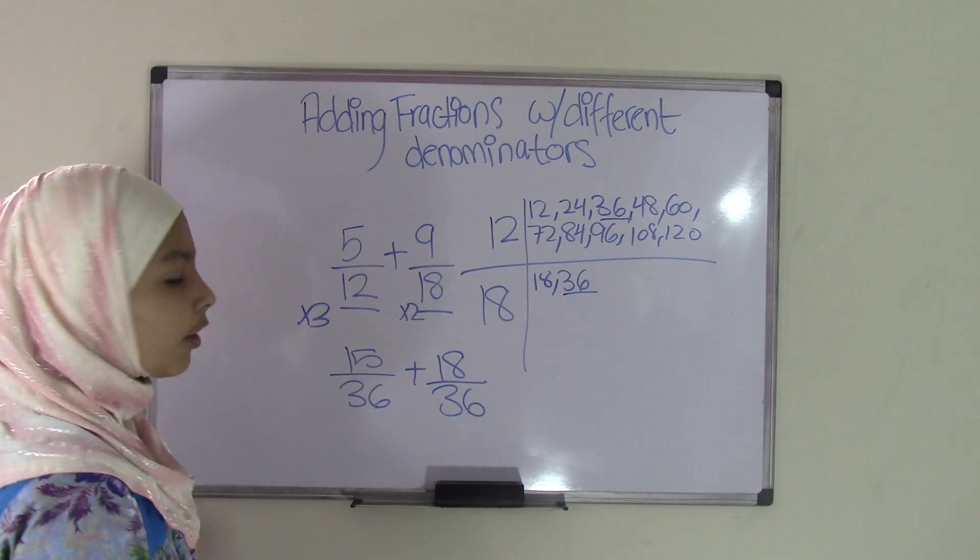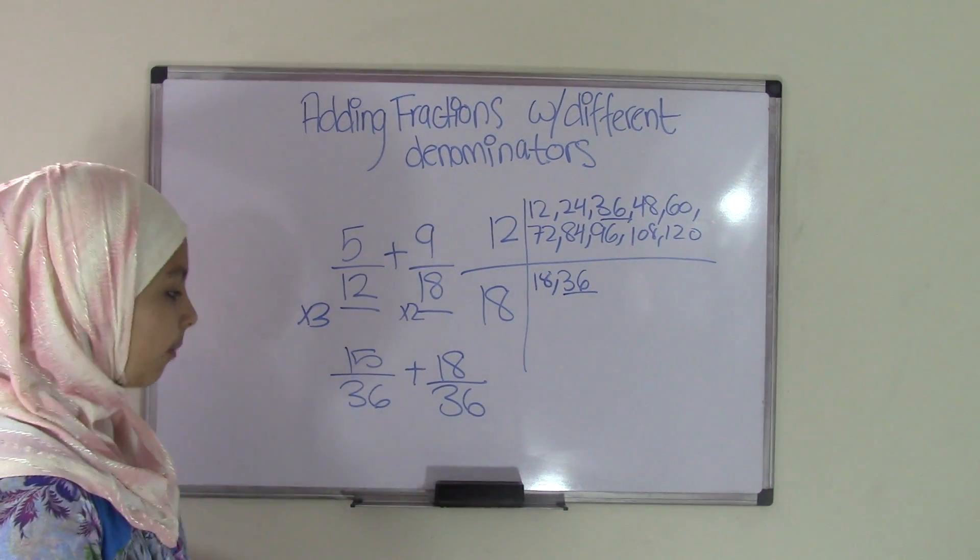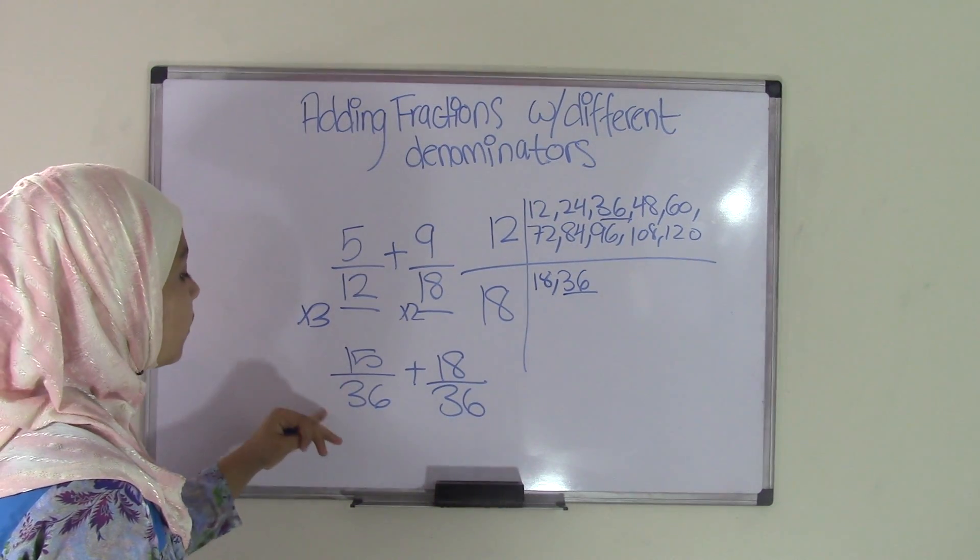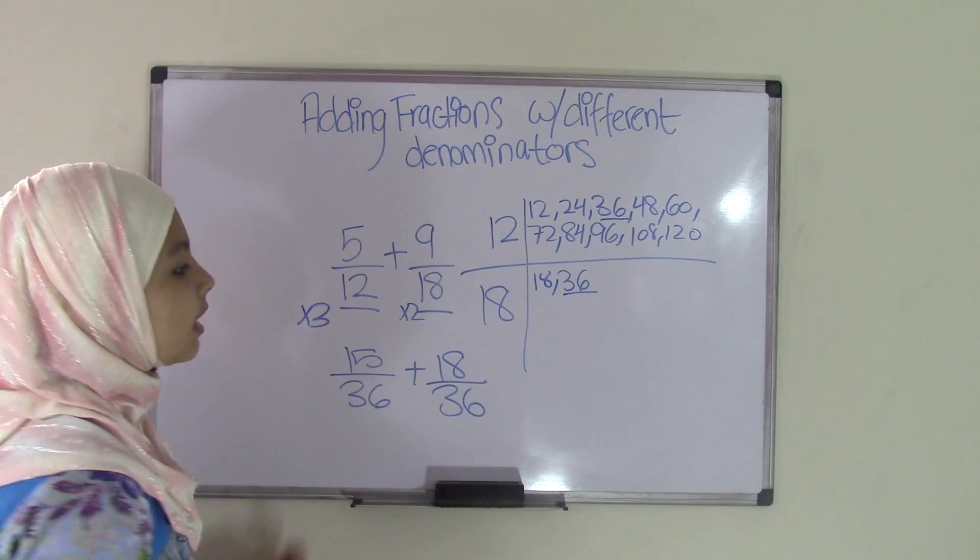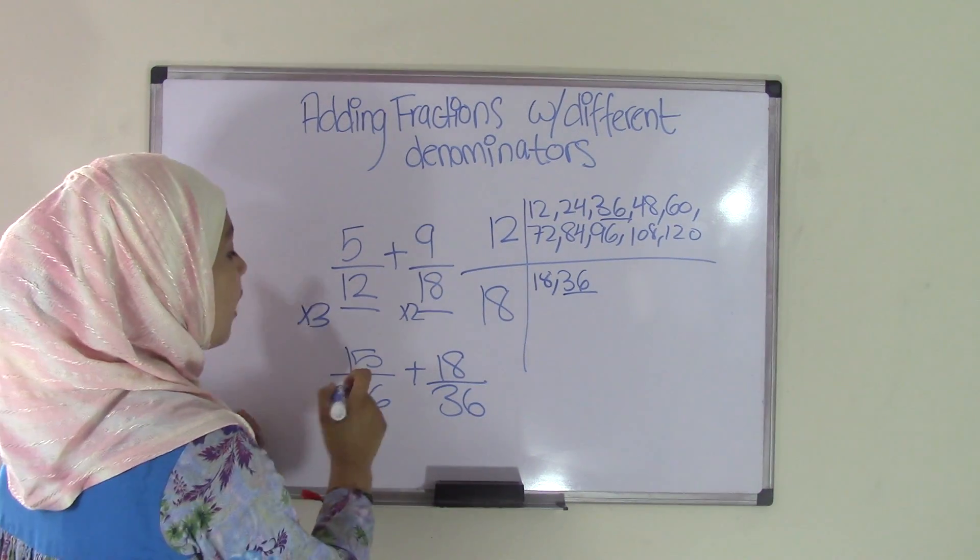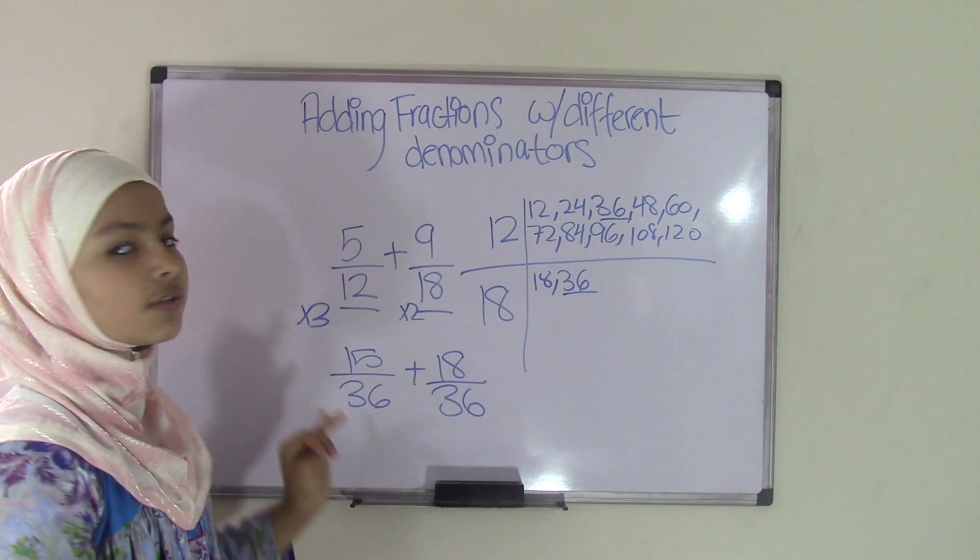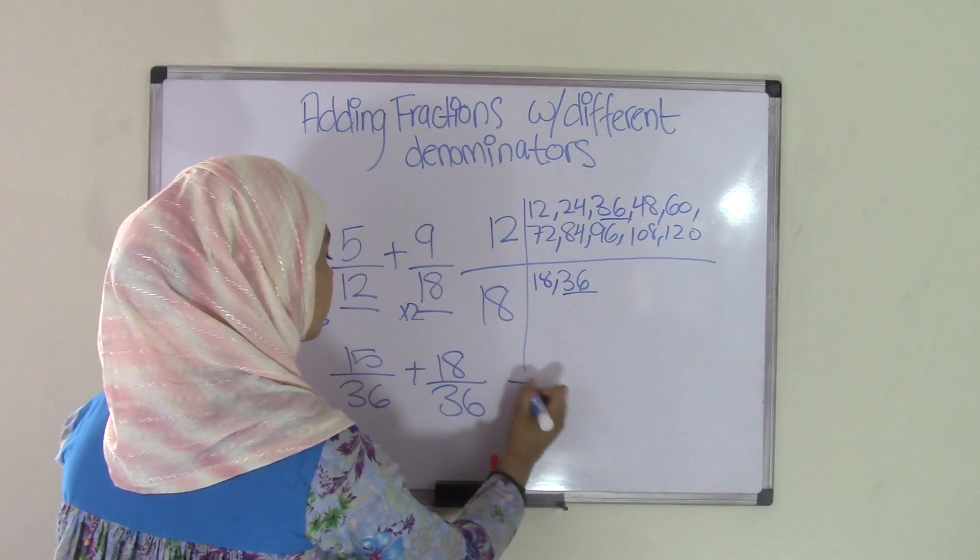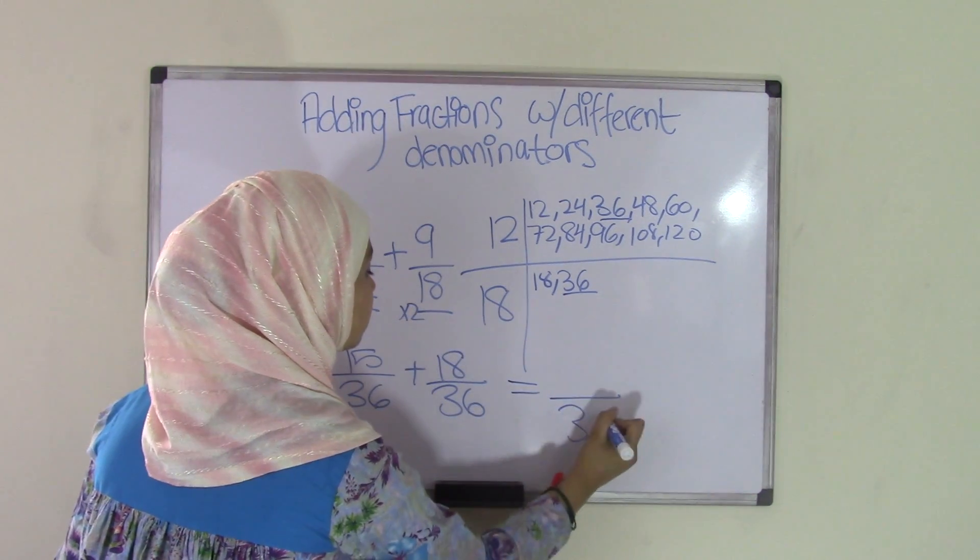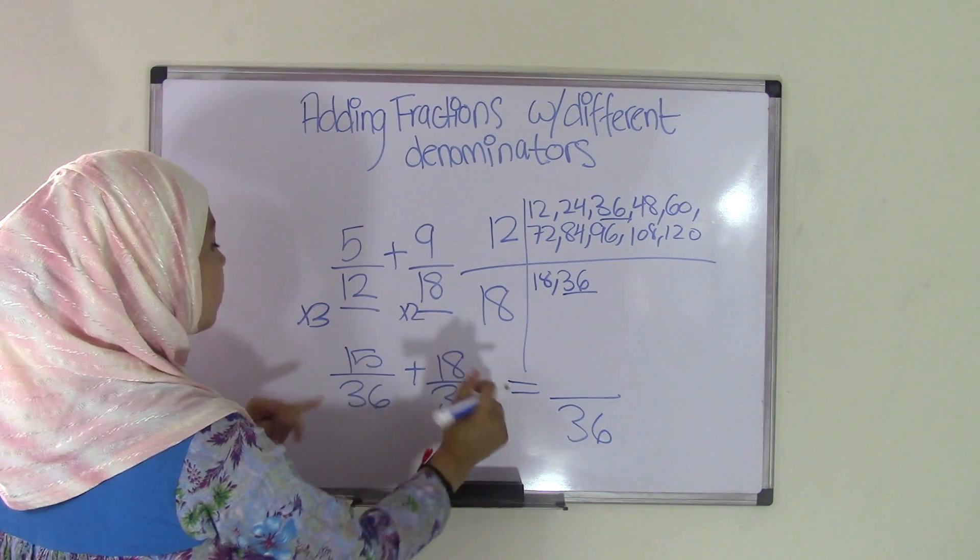That means our new fractions with common denominators are 15/36 plus 18/36. Now, our last step remaining is you have to add. Now, remember, whenever you're adding or subtracting fractions, the denominator stays the same. So that means we're just going to write 36 as the denominator and add 15 plus 18.